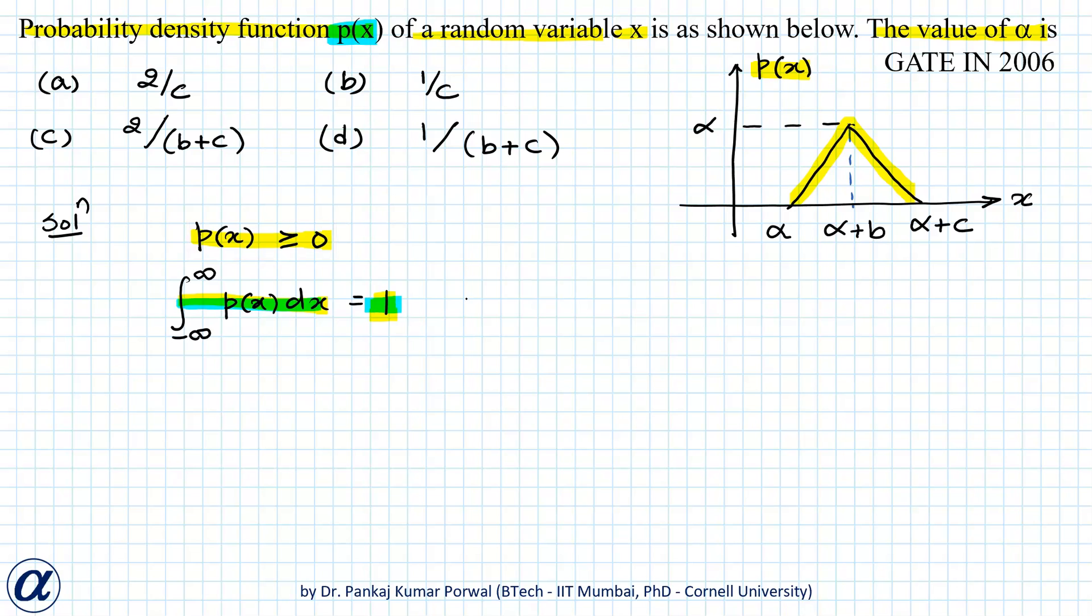Let's write that. Because this is a triangle, the area under the curve will equal the area of this triangle, which I can write as half base times height. Here the base is this distance which is c and the height is this distance which is alpha.